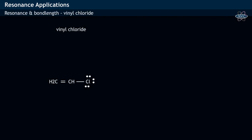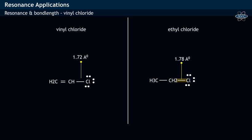In vinyl chloride, it is observed that the carbon-chlorine bond length is less, that is 1.72 angstroms, compared to the one present in ethyl chloride which has more bond length.